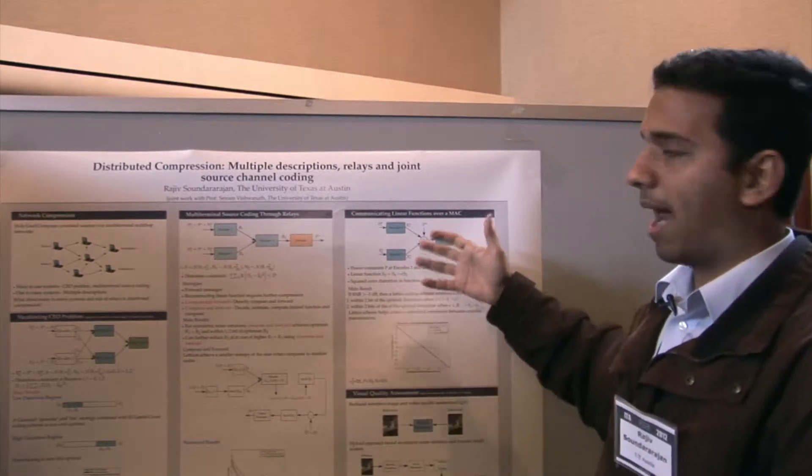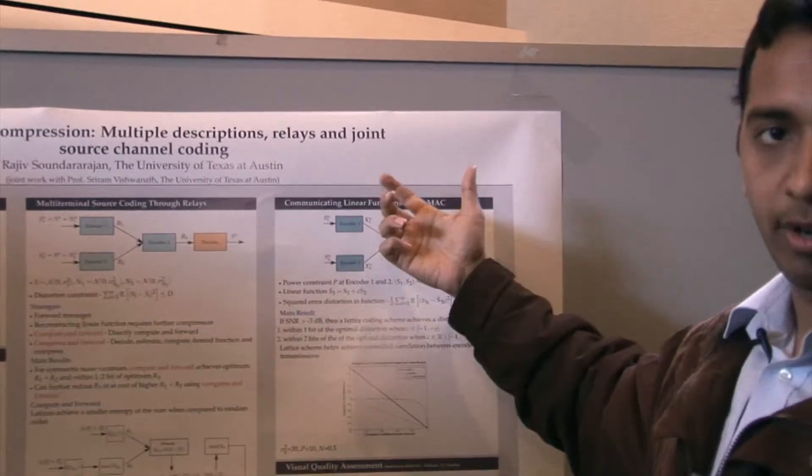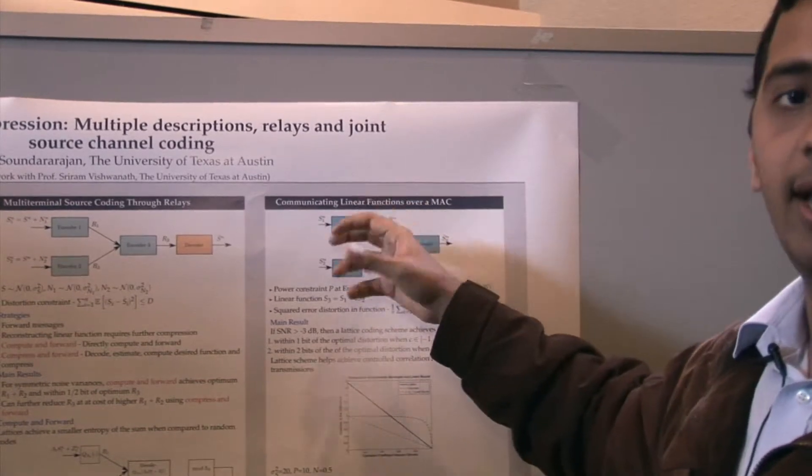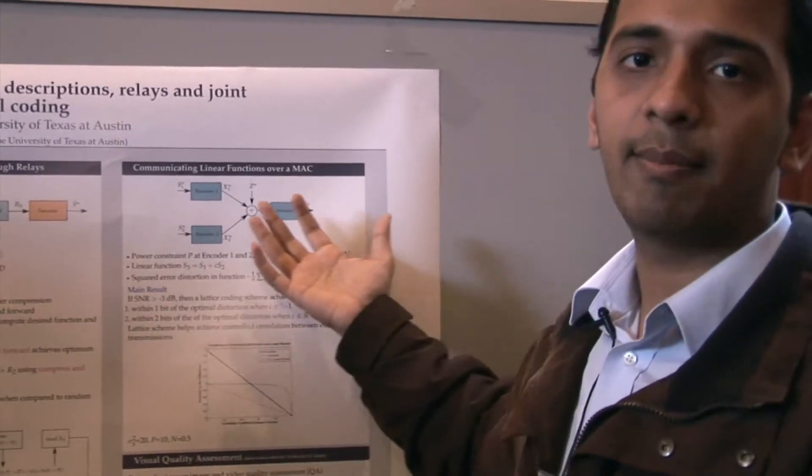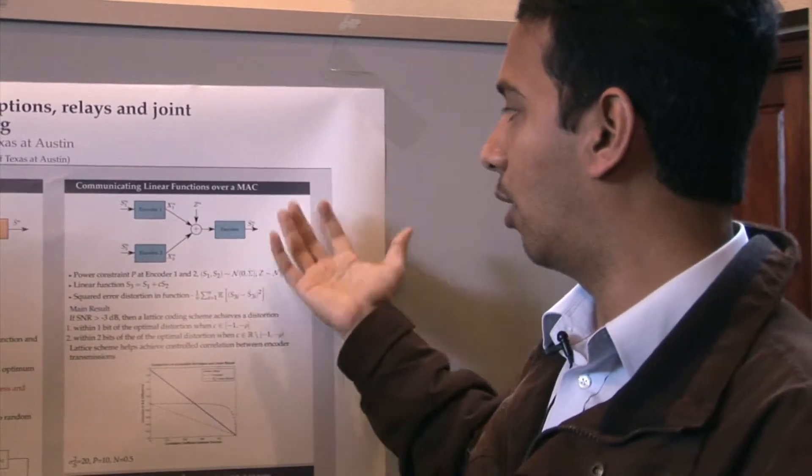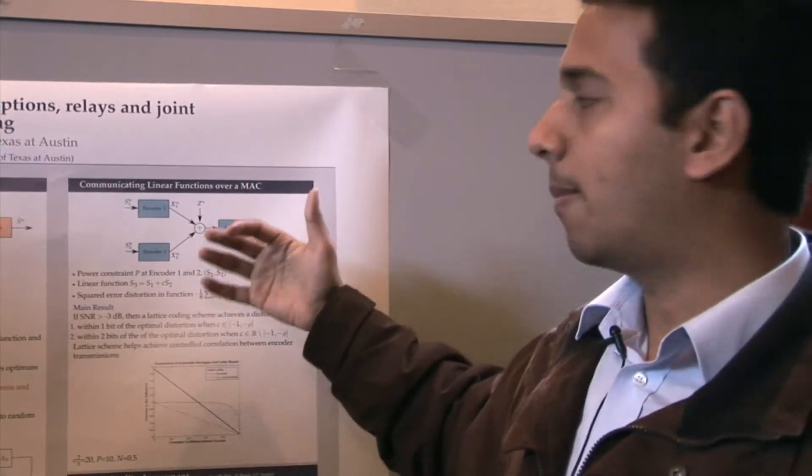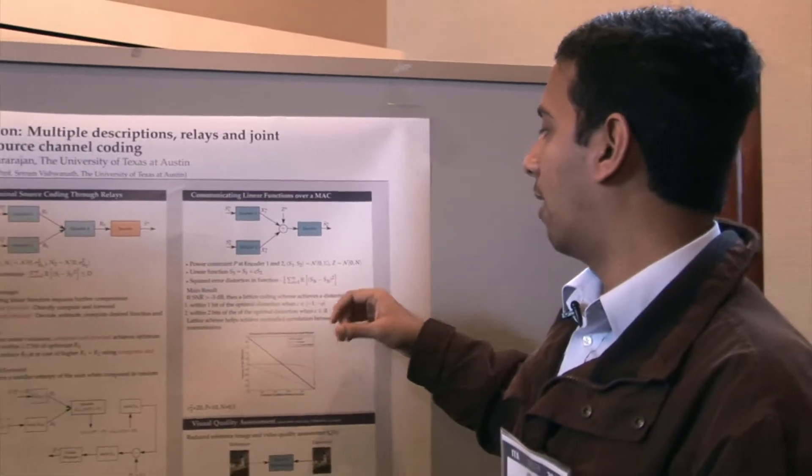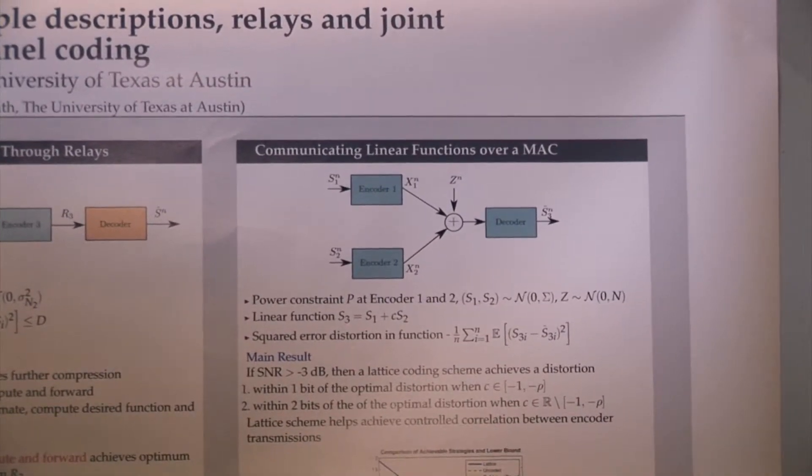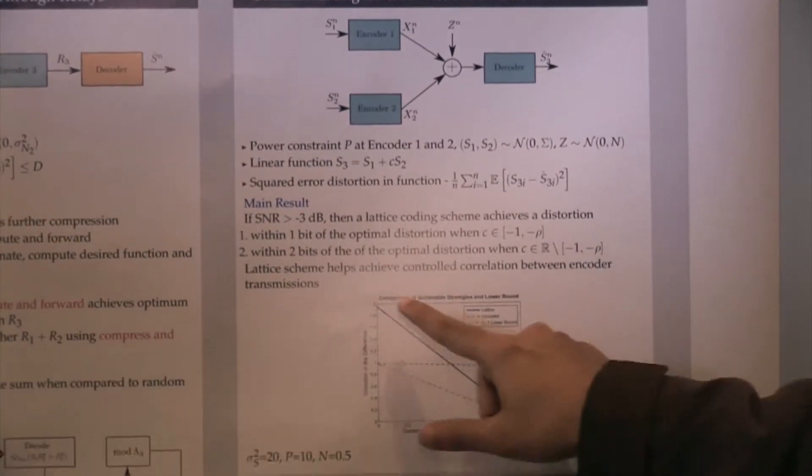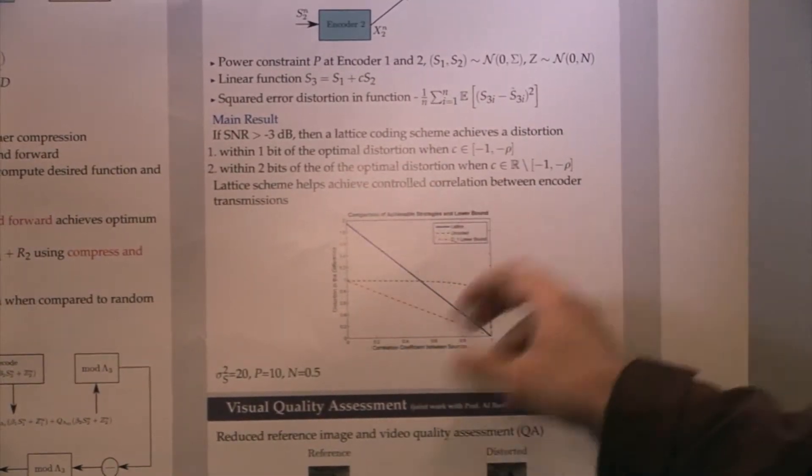We also look at another problem involving communicating linear functions over a multiple access channel. We have two correlated sources and we are interested in a linear function of these at the destination. We show that a lattice scheme actually achieves within a constant bit of the lower bound in the distortion for this problem. The problem also involves coming up with novel bounds in the performance which help us show this constant gap result. The uncoded transmission achieves a better distortion at low correlations, but we show that the lattice scheme is always within a constant bit of the lower bound for any correlation.